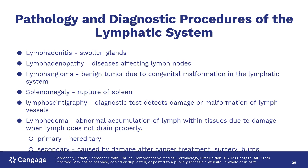Diseases associated with the lymphatic system include lymphadenitis — 'itis' meaning inflammation — and when things are inflamed they get swollen, so lymphadenitis means swelling of the lymph glands.